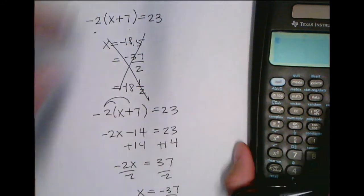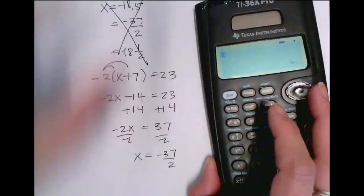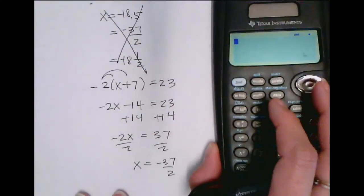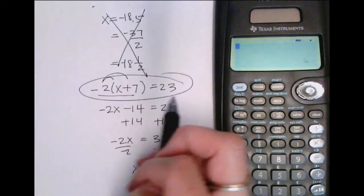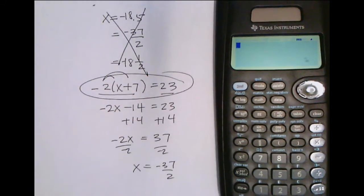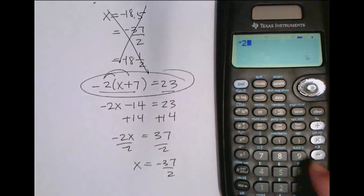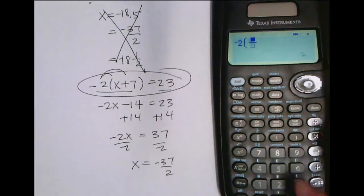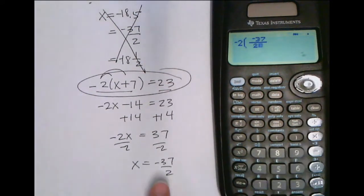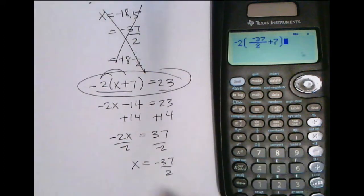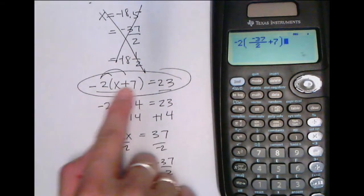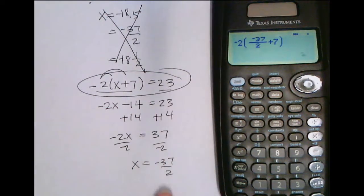You will probably want to just use your calculator to check your work. So when you're using your calculator to check your work, you're just going to go back to here. And these two sides should equal each other, right? So I'm going to take negative 2, I'm going to plug in negative 37 over 2, which is my solution, right? Plus 7. That is the left side of this equation, replacing x with what we said x was equal to.